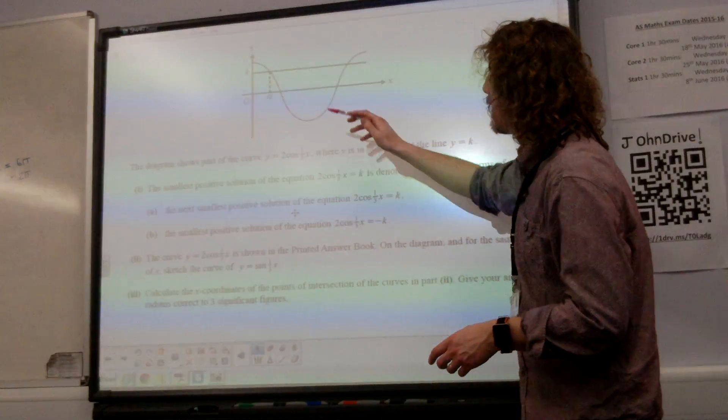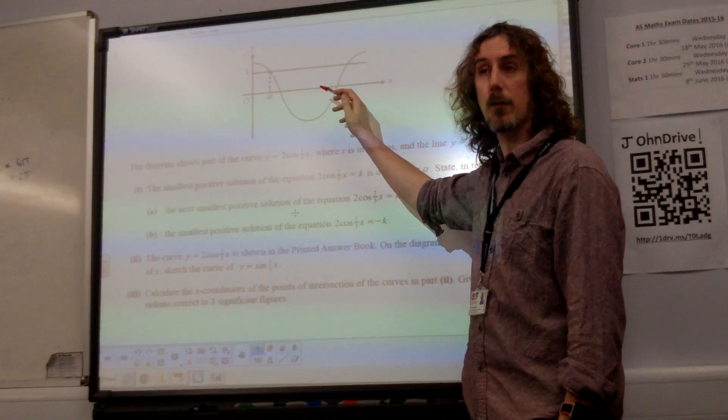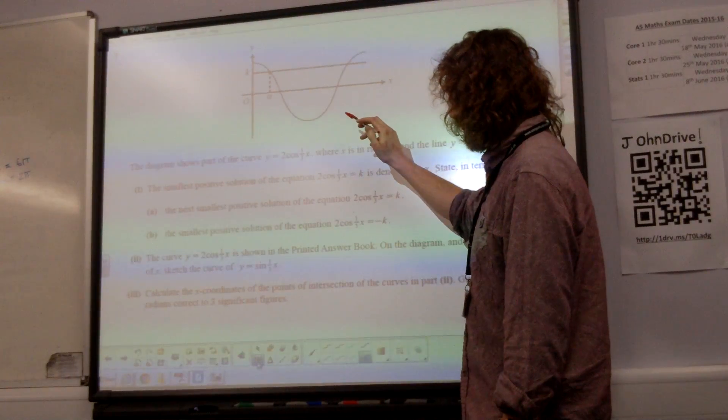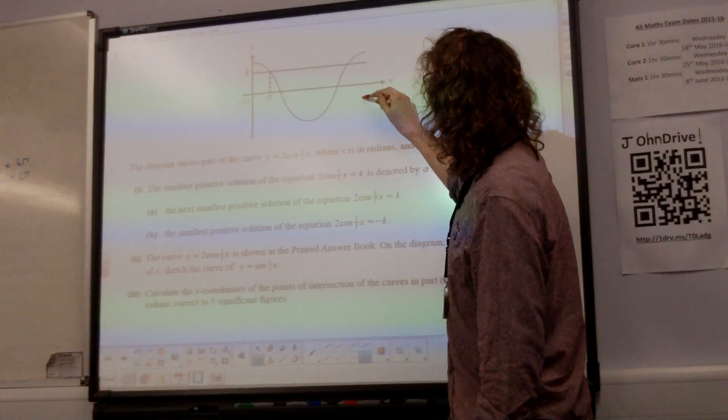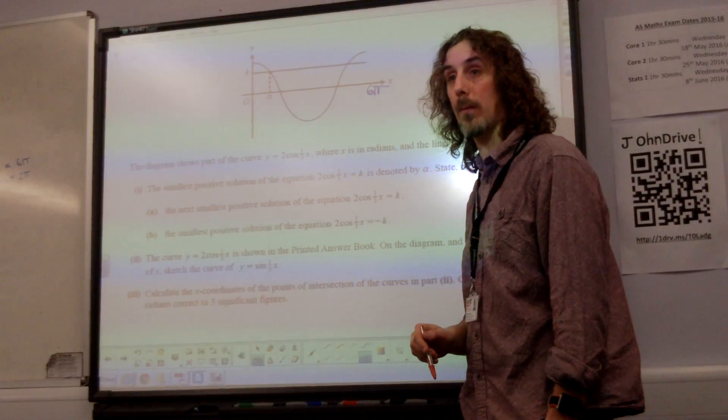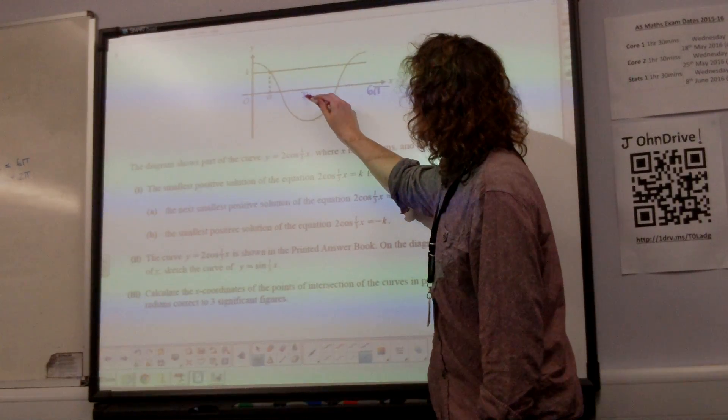So that end point, which normally in a cos graph is at 2 pi, is 3 times as far away. So that point at the end there must be 6 pi, where it completes its cycle. So this point, halfway along, must be 3 pi.